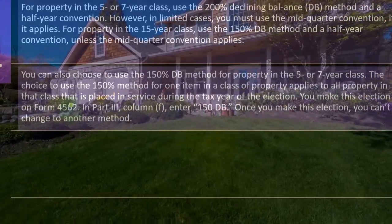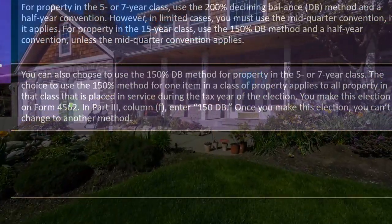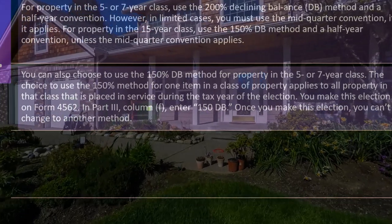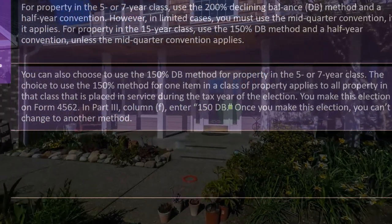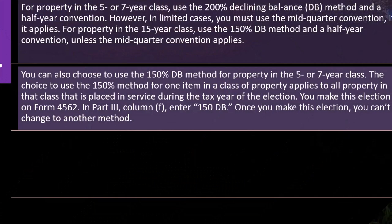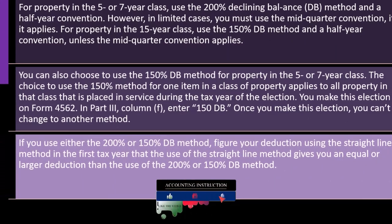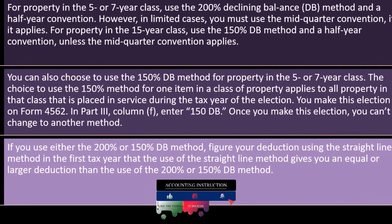If you're switching from 200% to 150% for property placed in service during the tax year, you make this election on Form 4562, Part III, Column F — enter '150 DB'. Once you make this election, you can't change it. You can't be flip-flopping after you've started a depreciation method — you've got to be consistent.